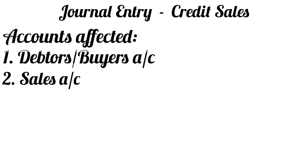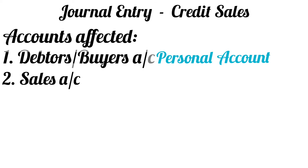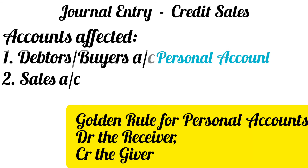The person who purchases goods from us on credit becomes our debtor. The debtors account will be a personal account. The golden rule for personal accounts says debit the receiver, credit the giver. Since the purchaser is the receiver of goods, his account will be debited.